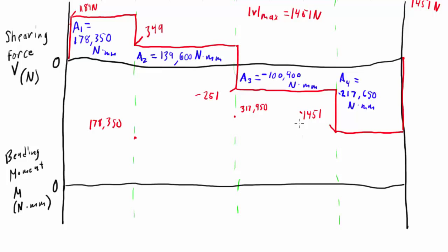Okay, then I add in this 139,600 and we get up to 317,950. And then we go down 100,400. I'm going to have to put this down here to avoid our shear force diagram, and then that's going to be at 217,550. And then I actually subtract 217,650, which brings me down to, believe it or not, negative 100. And remember how I was saying about some round-off error? Well, here it is, but it's a fairly small amount.